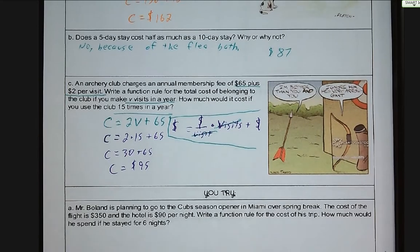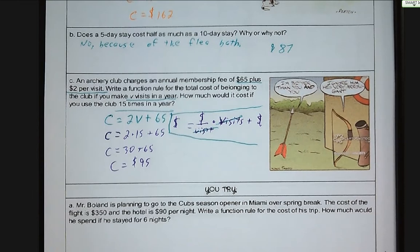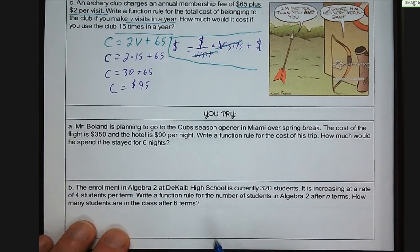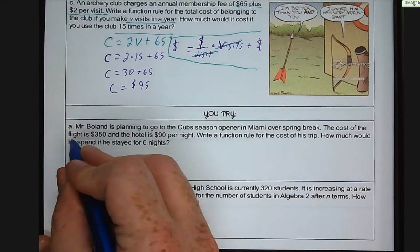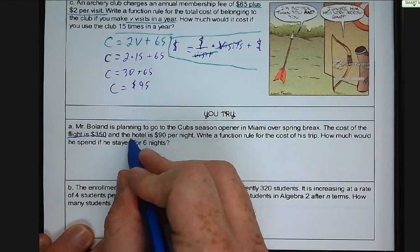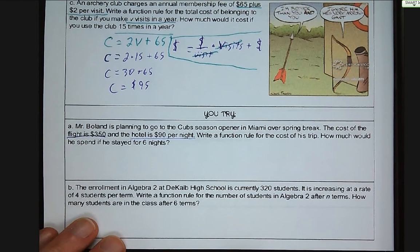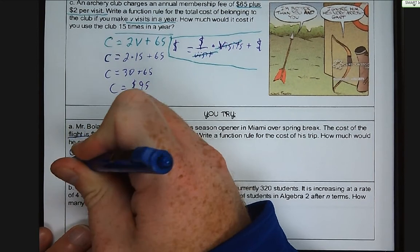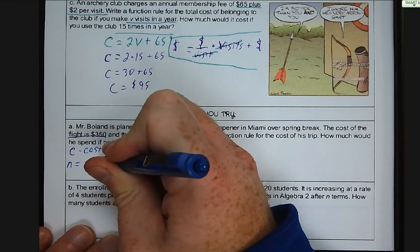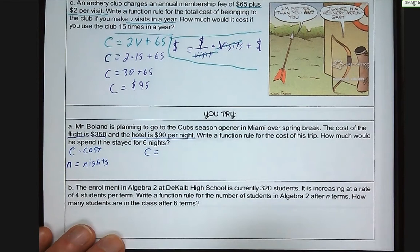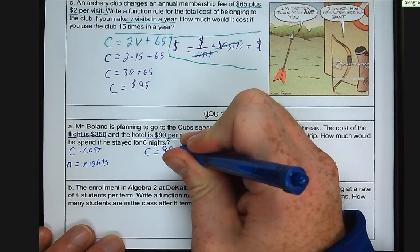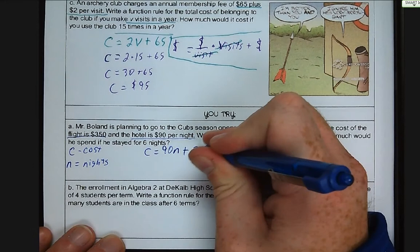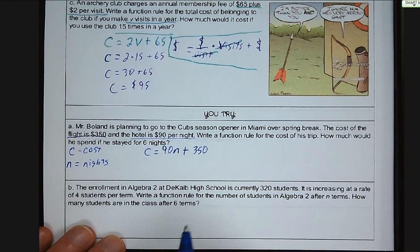Why don't you guys try letters A and B, and then we'll go over them. So Mr. Boland is planning to go to the Cubs season opener in Miami over spring break. The cost of the flight is $350 and the hotel is $90 per night. I wish. Write a function rule for the cost of this trip. And then how much would he spend if he stayed for six nights? So we have C is cost, N is nights.